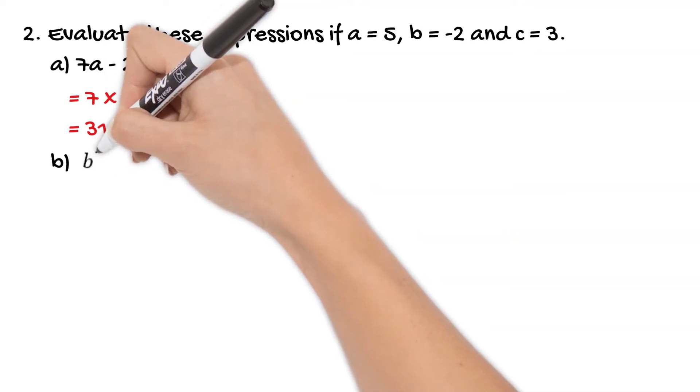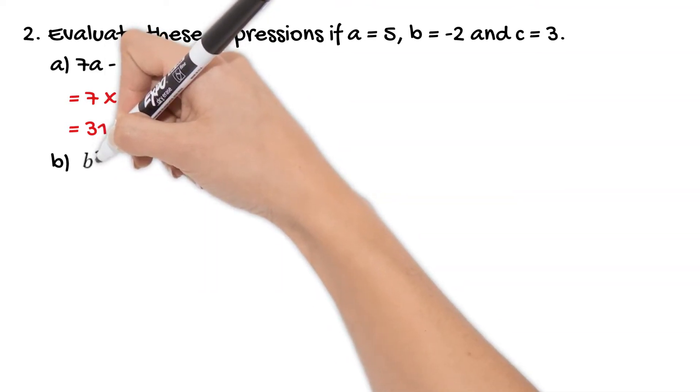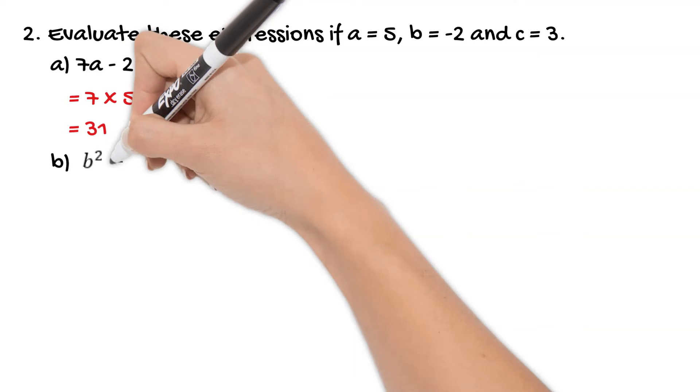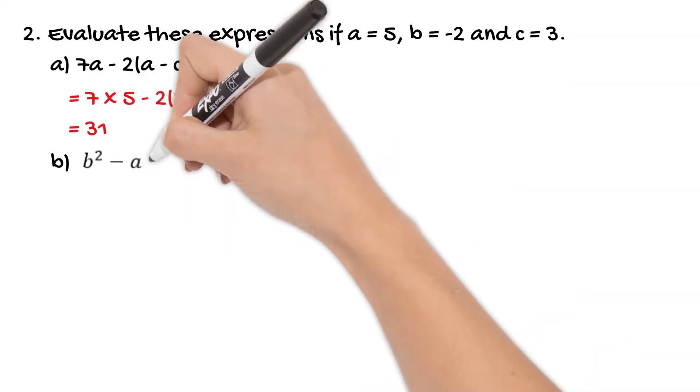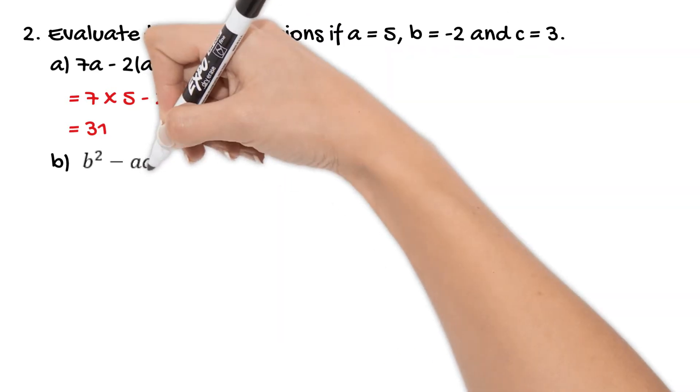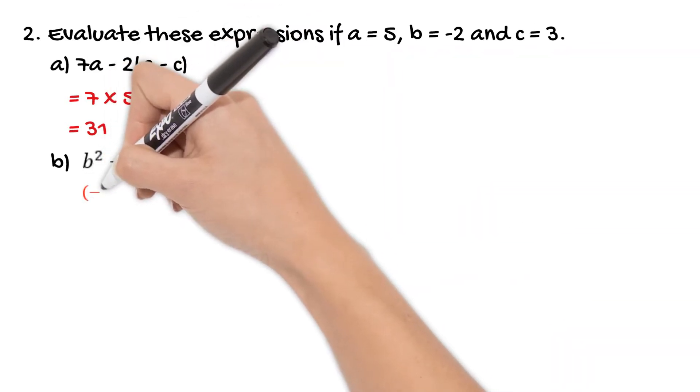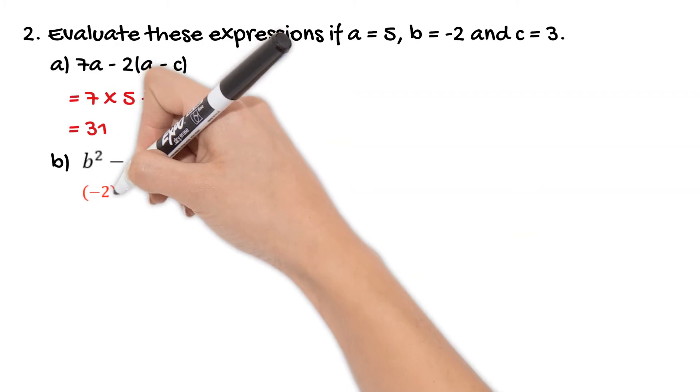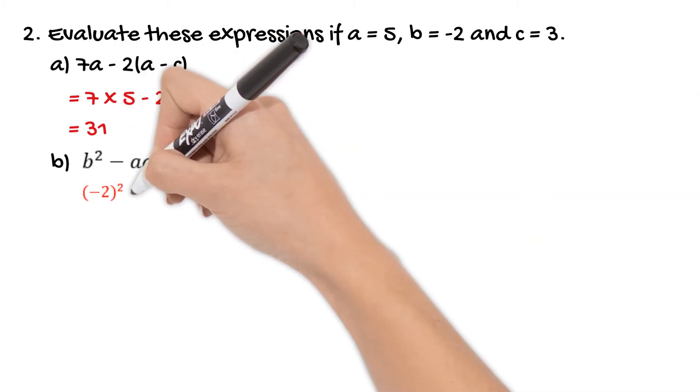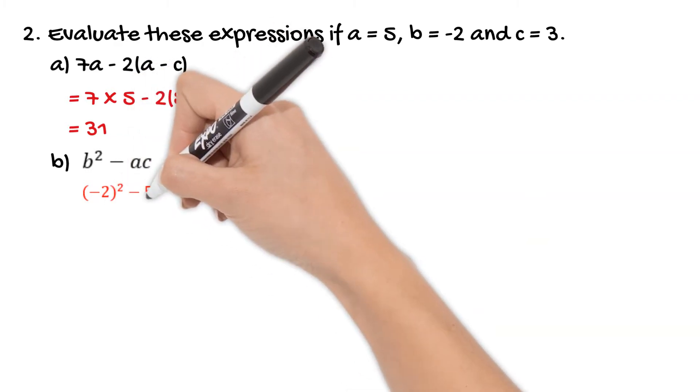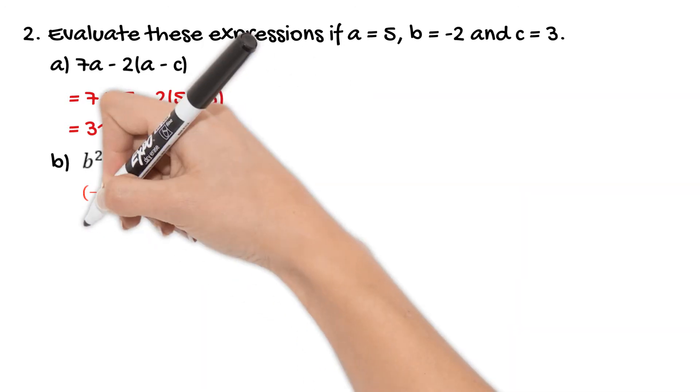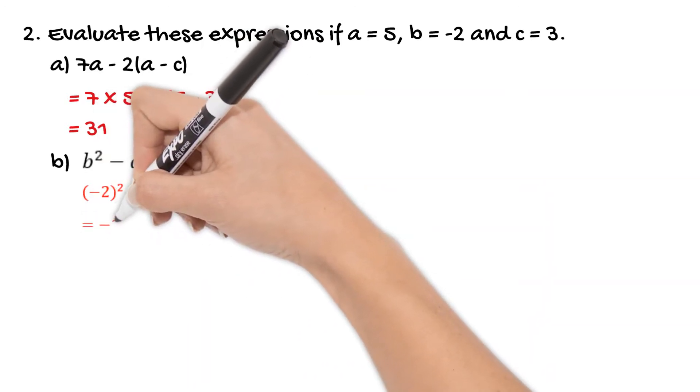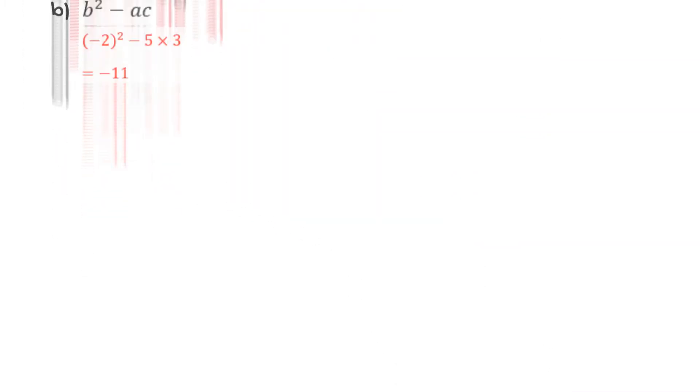So just another example using those same values we'd have b squared minus ac. So again just inputting our values. So instead of b we've got negative 2. So negative 2 squared. Now ensure you put that in brackets so your calculator knows that you are squaring negative 2 and gives you the correct answer. Minus 5 times 3 instead of ac and then we end up of course with a value of 11.